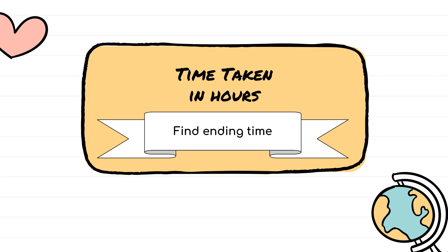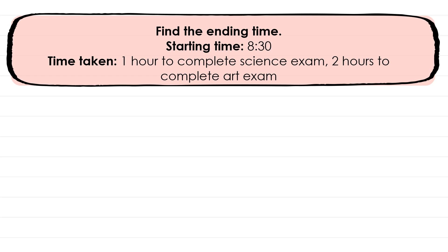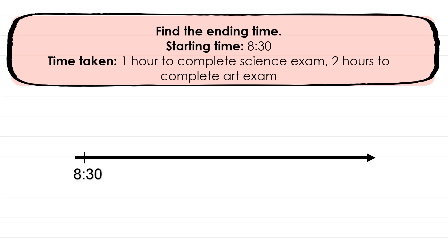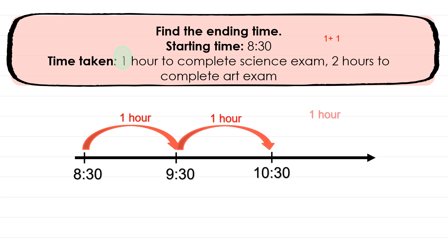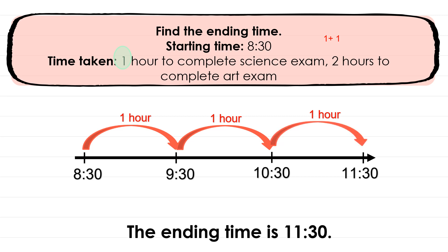Now we're going to focus on finding the ending time for time taken in hours. First example — the starting time is 8:30. It takes one hour to complete a science exam and another two hours to complete an art exam. Using a number line starting at 8:30, I split the two hours into 1 plus 1. After one hour it's 9:30, after another it's 10:30, and after the science exam's one hour it's 11:30. So the ending time is 11:30.